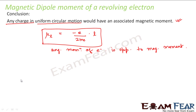Similarly, because the electron has spin — the electron spins about itself — there is another magnetic moment associated with it, known as the magnetic moment due to spin, denoted by μ_s. So the net magnetic moment of an electron is given by the vector addition of μ_s and μ_L. We will discuss this further when we cover electrons specifically, but the key point is that any charge in uniform circular motion constitutes a current and will have an associated magnetic moment.